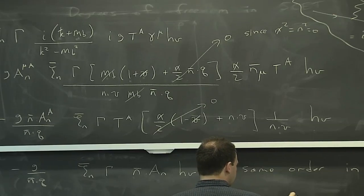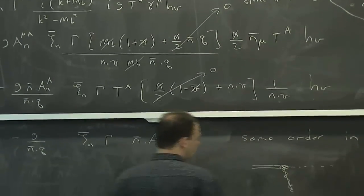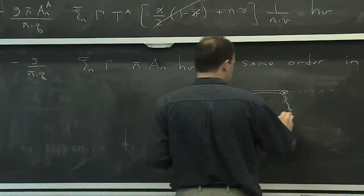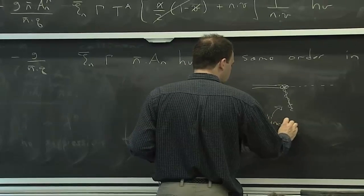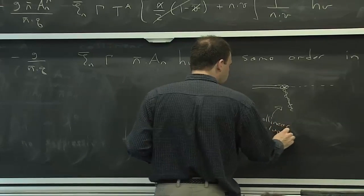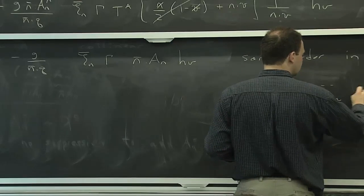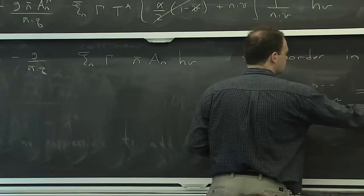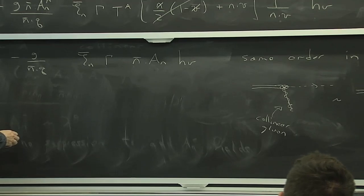That's exactly what we were saying we should worry about — the fact that we can add these gluons without any cost. We just added one and found that we have an operator that's the same order. There's a convention for collinear gluons where you put a line through them. So this diagram with one collinear gluon is the same order as the diagram with no gluon.